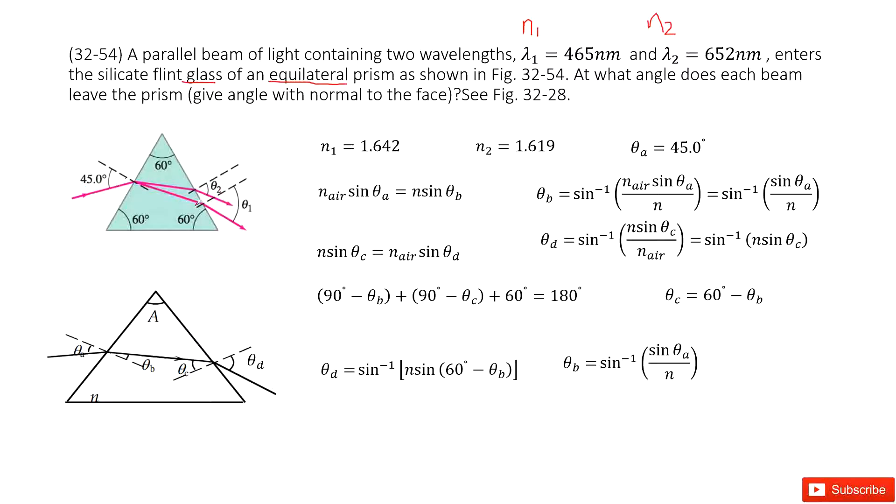So that means we need to find theta 1 and theta 2. Because these two waves are almost very similar except they have n1 and n2 index different, we can draw a simple picture. The wave gets in and travels through the glass and gets out.